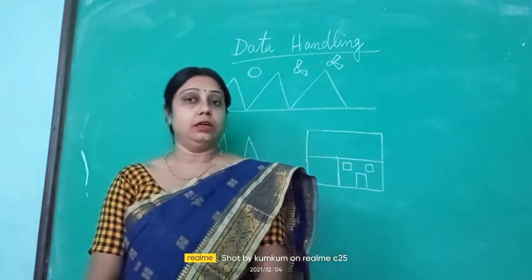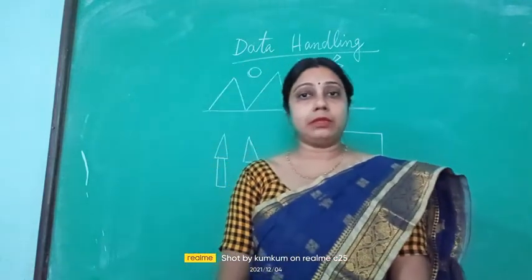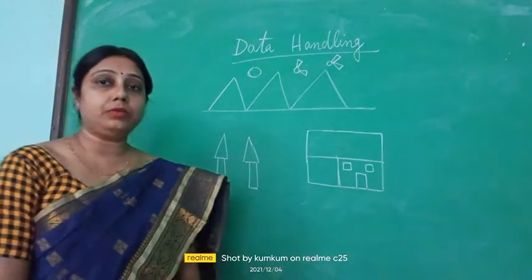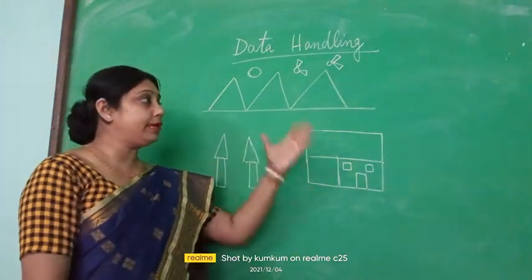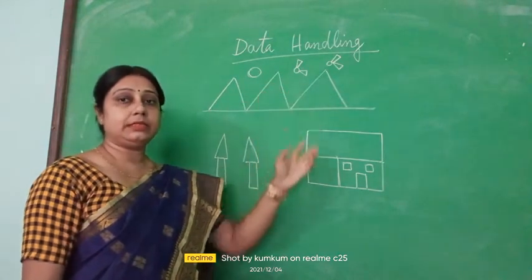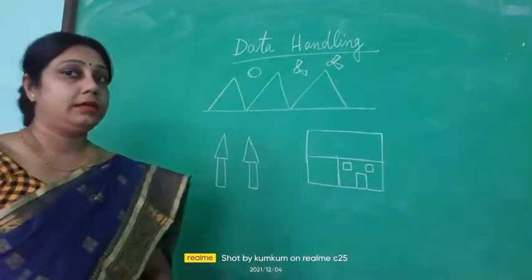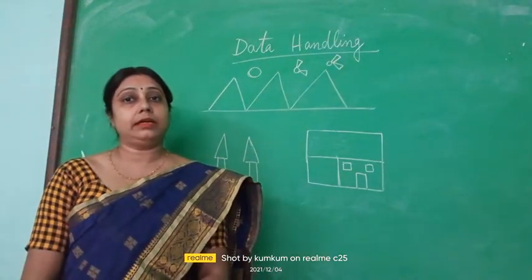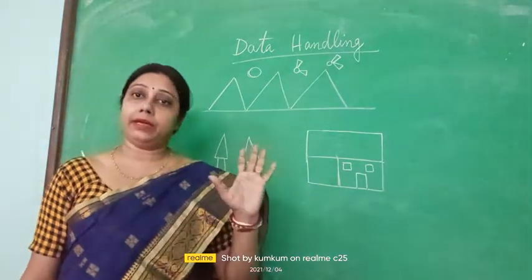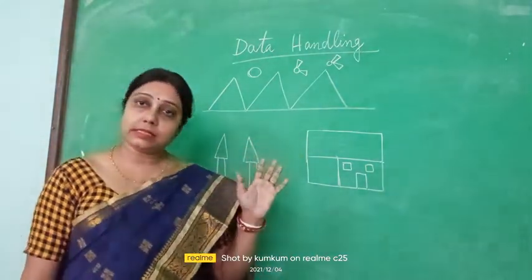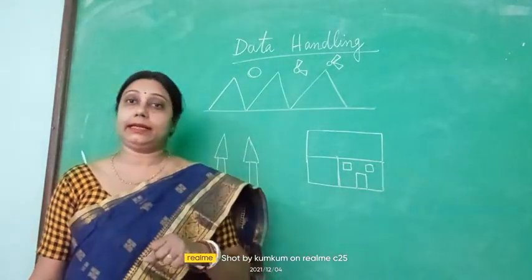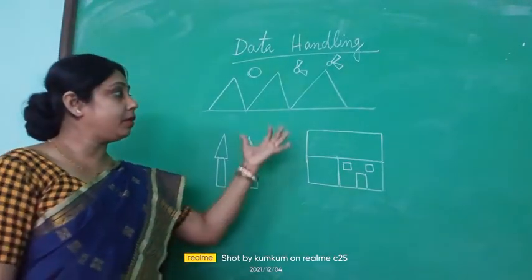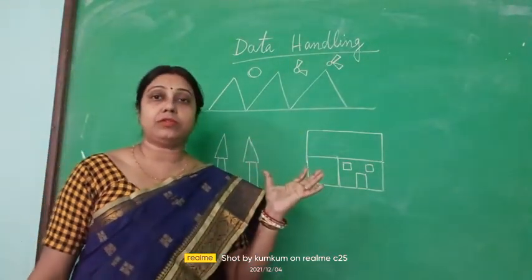Now suppose I am giving you a diagram. Please see — you can understand. There are a few mountains, a sun, two birds, a house, and two trees. I have drawn a scenery and given you information here. Now from this I can frame many questions. Let us see how you can collect the data from the given information. This is the information given to you, and from here we are going to collect information about different types of shapes.